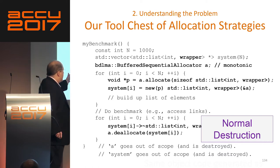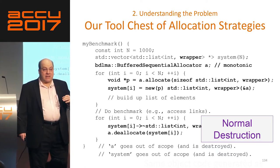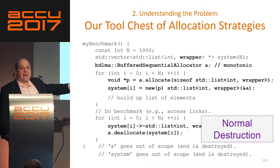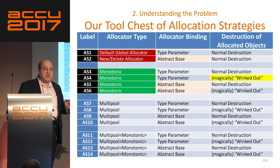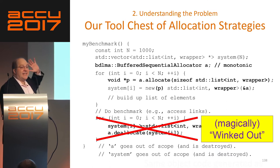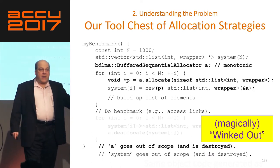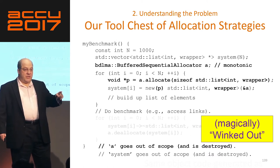What we're doing here for normal destruction is explicitly destroying the object and then deallocating it back to the allocator — destroy and deallocate. This is something you might give somebody on a low-level C++ quiz. Now for the magic part: here we have the wink-out. I just deleted that destruction code — it's gone. This is magically winked-out code because when the allocator goes out of scope, all of the memory goes away. Somebody's going to have a problem with this. We chose not to execute the destructors.